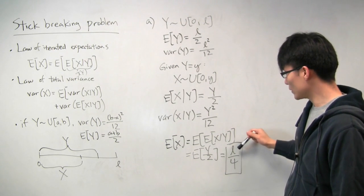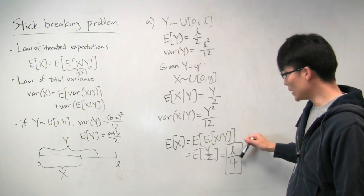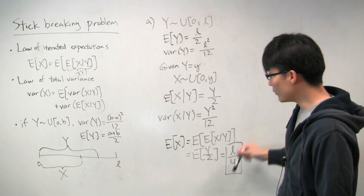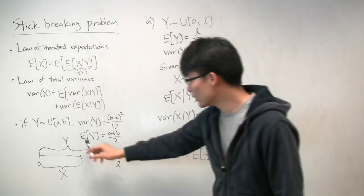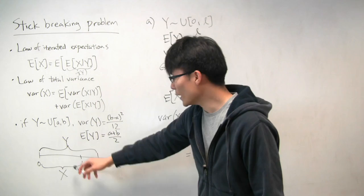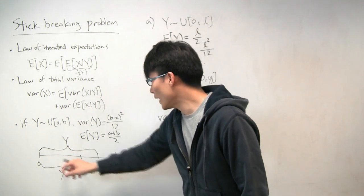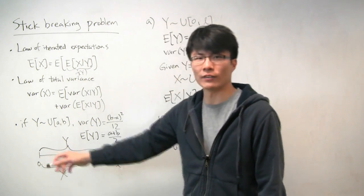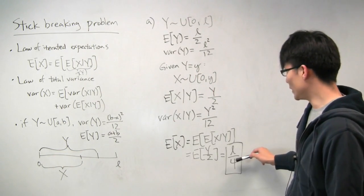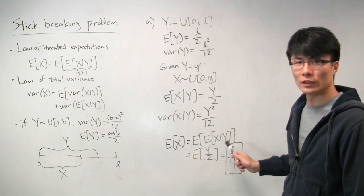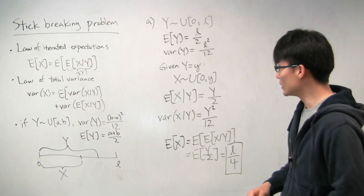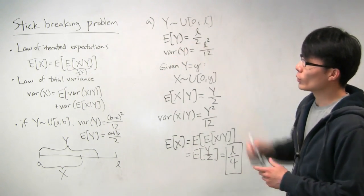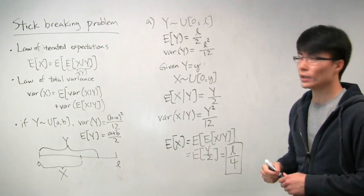Notice that this actually makes sense intuitively. On average, the first break will be somewhere in the middle, leaving us with half the stick. Then we break it again, and on average that'll leave us with another half. So on average, you get a quarter of the original stick left, which makes sense. That's the first part, where we used the law of iterated expectations.